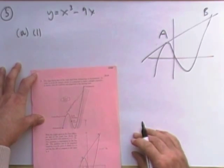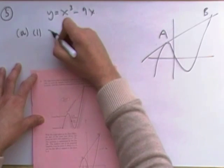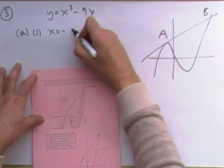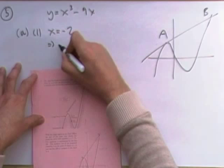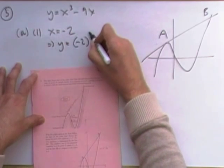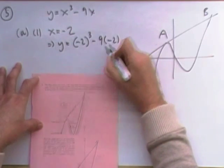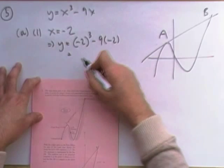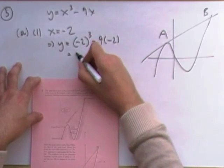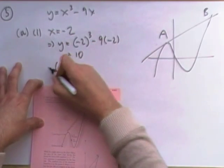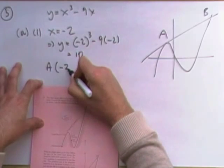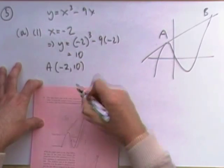A. Write down the coordinates of A. So substitute it in. Well, if X is negative two, that means Y is going to be negative two cubed minus nine times negative two, which is going to give you then ten. So A is the point negative two, ten.